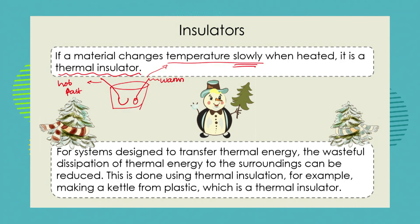Now, in systems designed to transfer thermal energy, the wasteful dissipation of thermal energy to the surroundings needs to be reduced. This is done using thermal insulation. So the kettle is designed to transfer thermal energy. But how much of that thermal energy is wasted or dissipated if we made the kettle out of metal, as old-fashioned kettles were? Today we have different kinds of plastics that we can make the kettle out of that won't melt at the temperature of boiling water, and therefore the plastic kettle keeps the water hotter for longer after you've boiled it, because it's not dissipating or wasting that heat energy through the sides of the kettle.